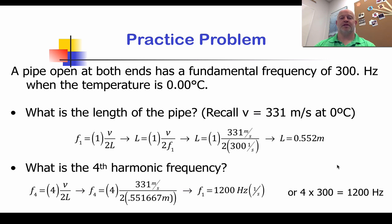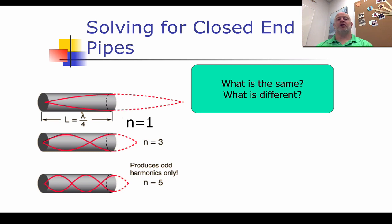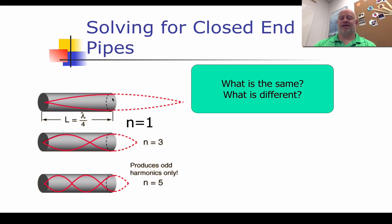There are additional practice problems for open-ended pipes in your homework. Now we're going to move on to solving for a closed-end pipe. A closed-end pipe doesn't mean both ends are closed — for a closed-end pipe we have one end open and one end closed. In that scenario things change a little. The closed end must have a node, and the open end must be an anti-node. So the first harmonic is only a fourth of a wavelength, not a half.